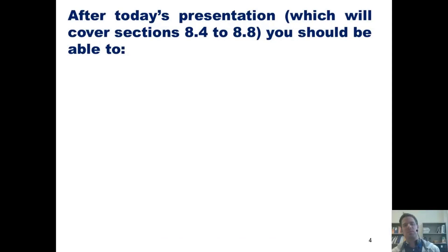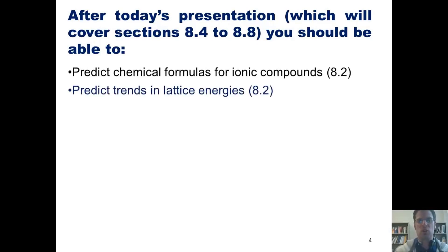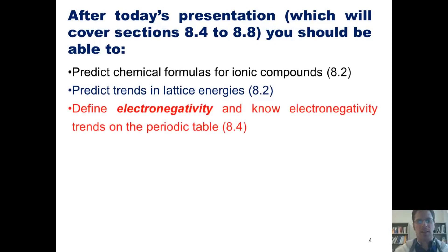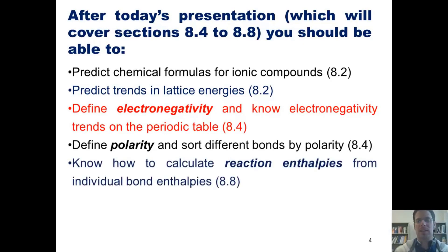After today's presentation, which will cover sections four to eight of chapter eight, you should be able to predict chemical formulas for ionic compounds, predict trends in lattice energies, define electronegativity and know electronegativity trends on the periodic table, define polarity and sort different bonds by their polarities, and know how to calculate reaction enthalpies from individual bond enthalpies.